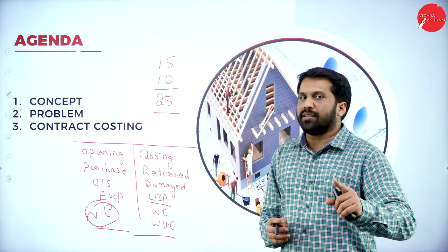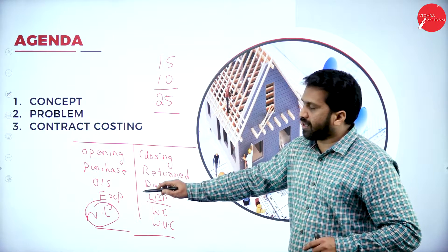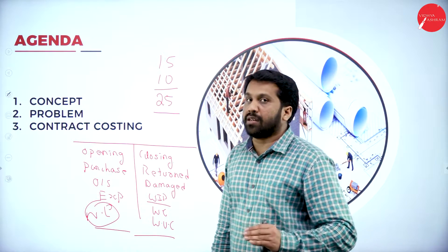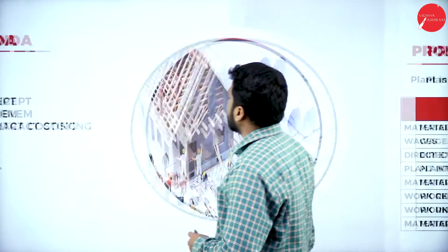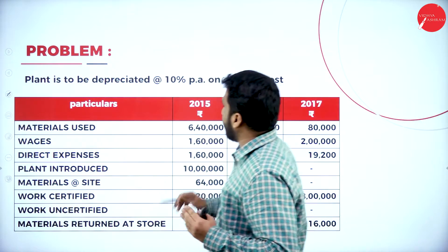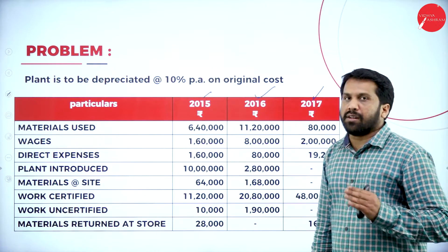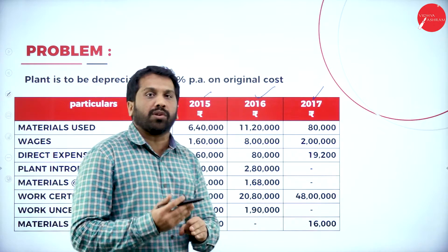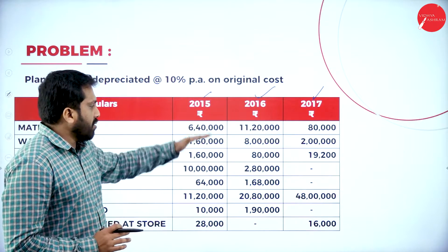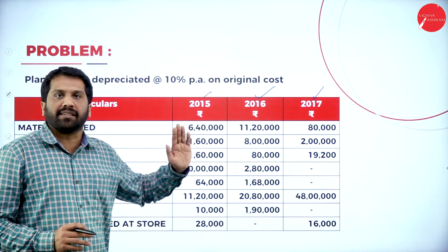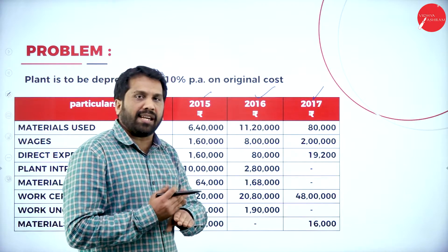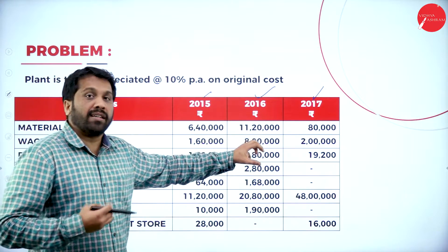So the format is: opening, purchases, outstanding expenses on the debit side; closing, returned, damaged, and work in progress (work certified and work uncertified) on the credit side. Now this will be your problem. We have calculations for three years — 2015, 2016, and 2017. Remember, while doing 2015, don't look at 2016 and 2017 — they are not interrelated. Everything is independent. Only the closing balances will become the opening balance for next year.